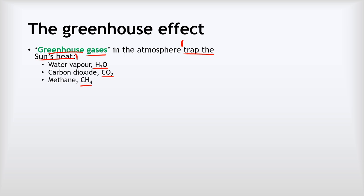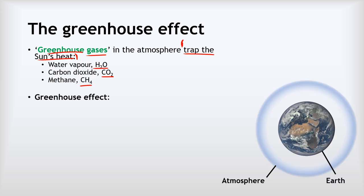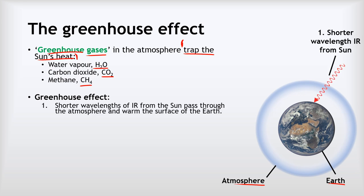But in more detail, here's what is happening. Here's the earth and the blue cloud around it represents the atmosphere. In the greenhouse effect, we start off with shorter wavelength IR — infrared radiation from the sun — which passes through the atmosphere and hits the surface of the earth, warming it.